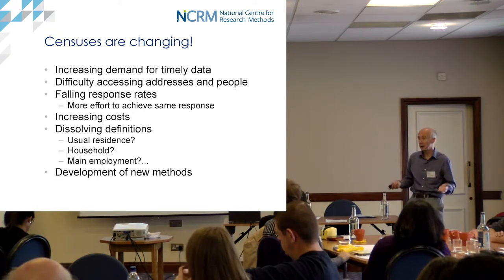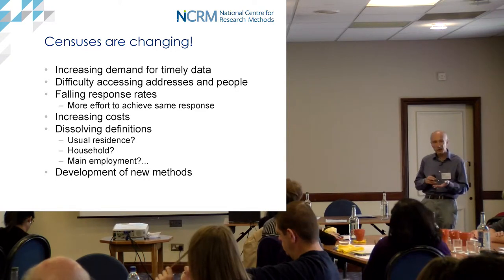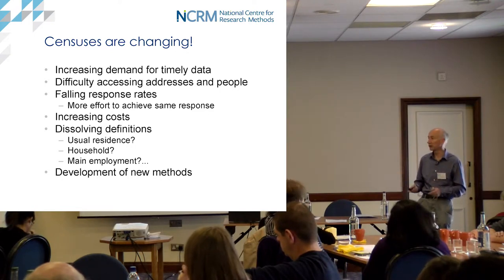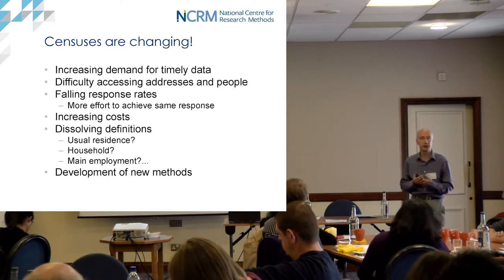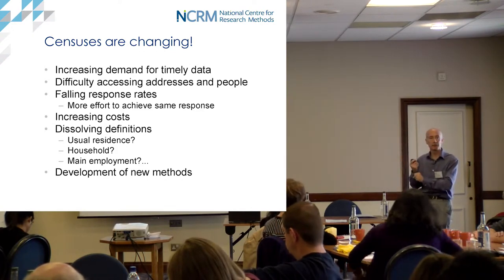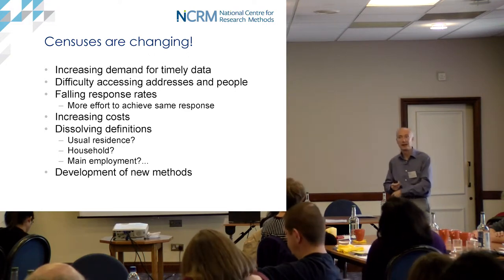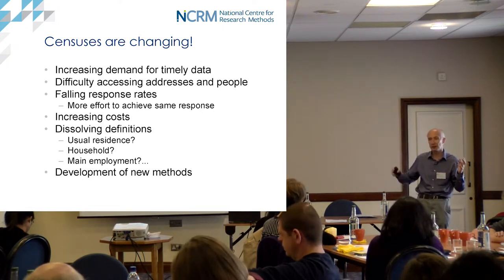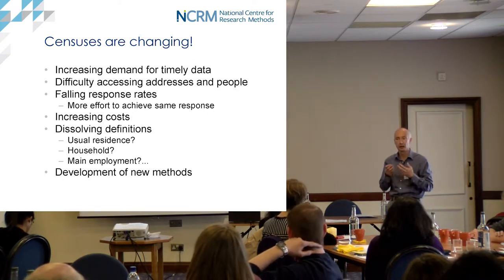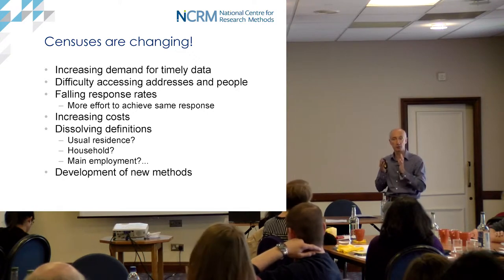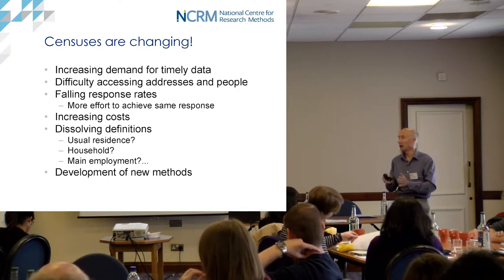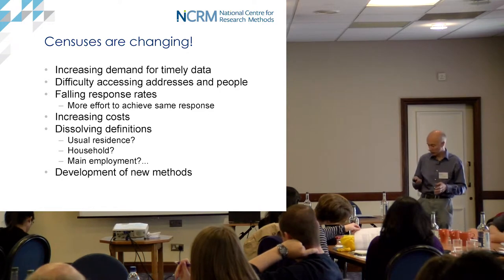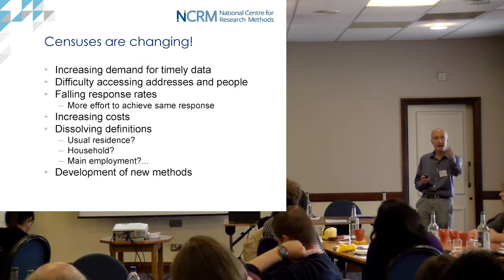They're not all coming up with the same solutions - we've got common challenges and some rather diverse responses. One obvious thing is increasing demand for really timely data. In England and Wales we only do censuses every 10 years; Ireland, Canada, Australia, and New Zealand do them every five years. Even a five-year gap is quite a long time, especially if you're wanting to think about moving into linked administrative data.